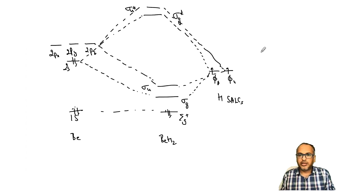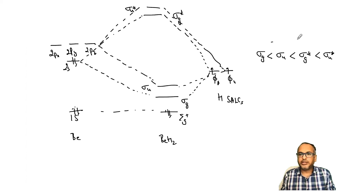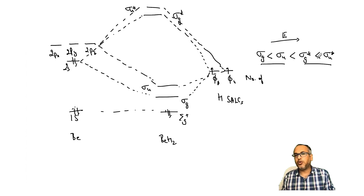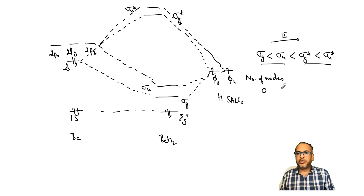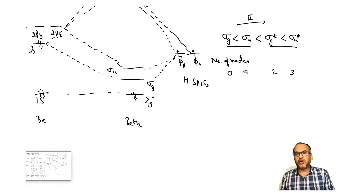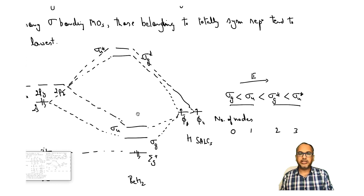The energy ordering is: σg lowest, then σu, then σg*, then σu* at highest energy. This is justified by the node count: σg has zero nodes, σu has one node, σg* has two nodes, and σu* has three nodes. More nodes correspond to higher energy. The bonding MOs lie below anti-bonding MOs, and the totally symmetric σg lies lowest among bonding MOs.